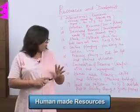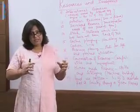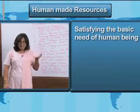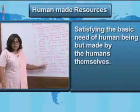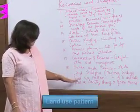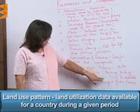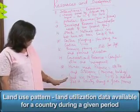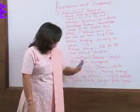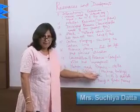Human-made resources are those created by human beings using their skill and intelligence — such as machines or buildings — which satisfy the basic needs of humans but are made by humans themselves. The land use pattern is the land utilization data available for a country during a given period — it tells us how land is being used.